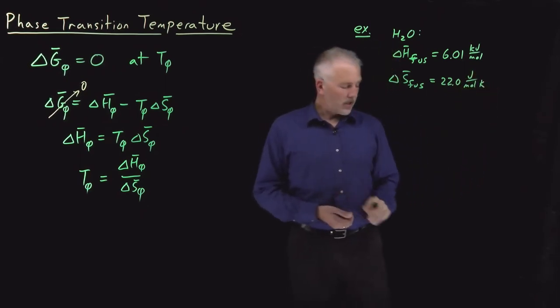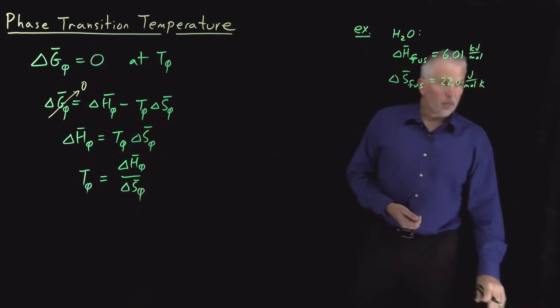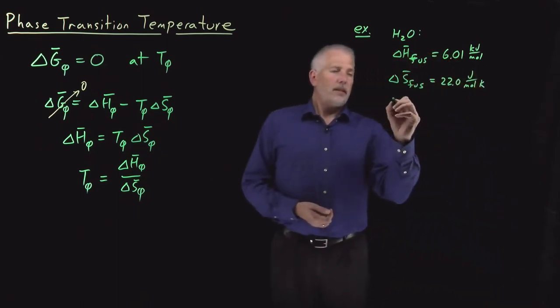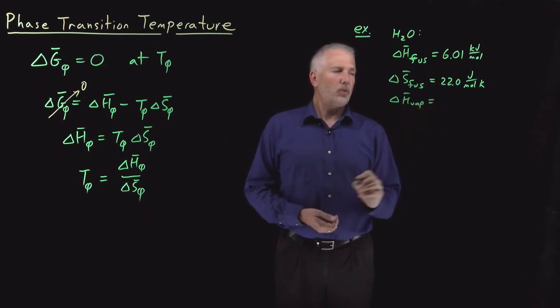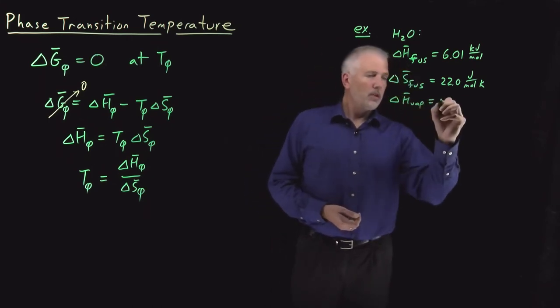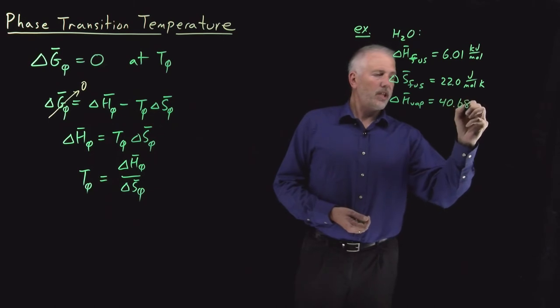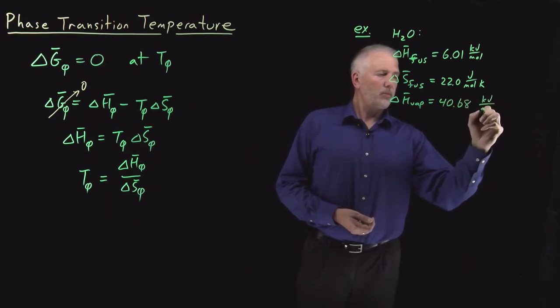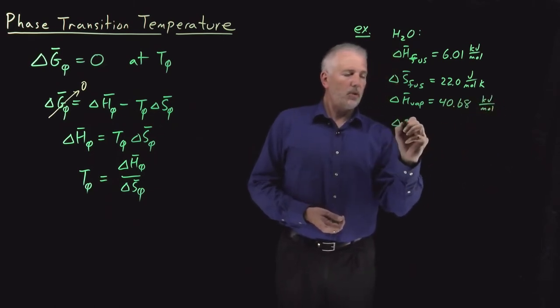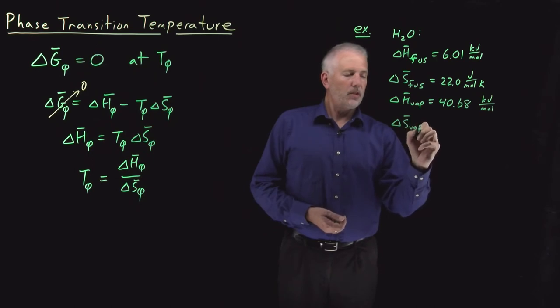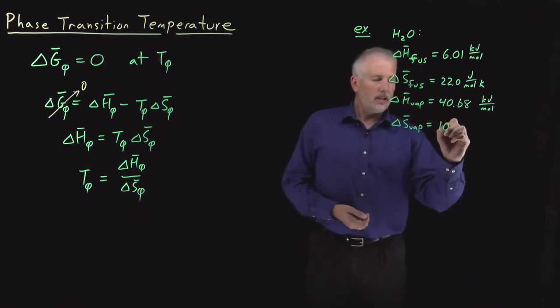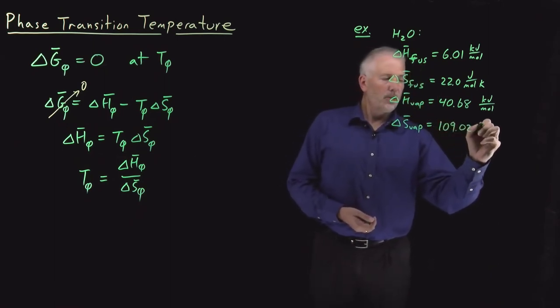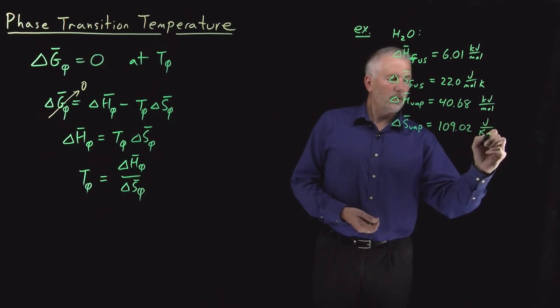And while we're at it, we can also look up data for boiling. The molar enthalpy of vaporization when water boils is equal to 40.68 kilojoules per mole, and the molar entropy of vaporization when water boils, its entropy increases by 109.02 joules per kelvin per mole of water.